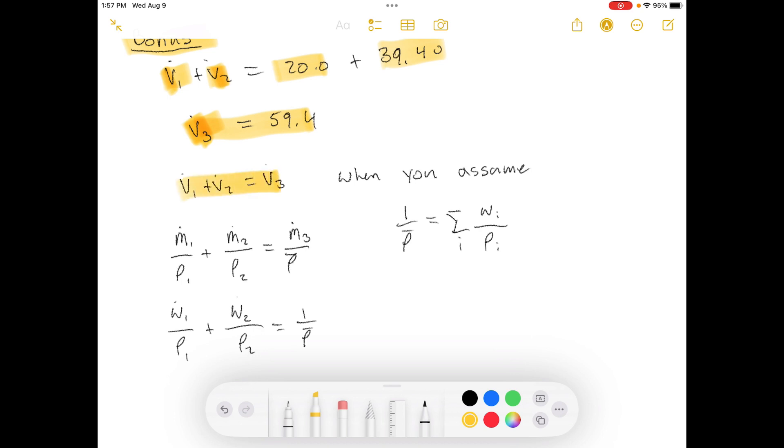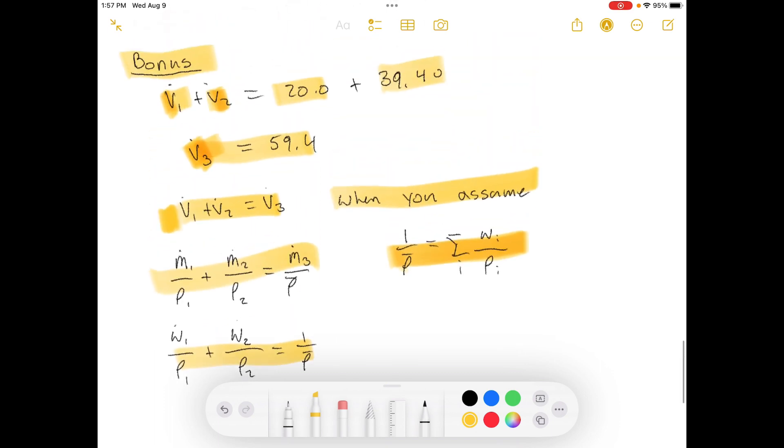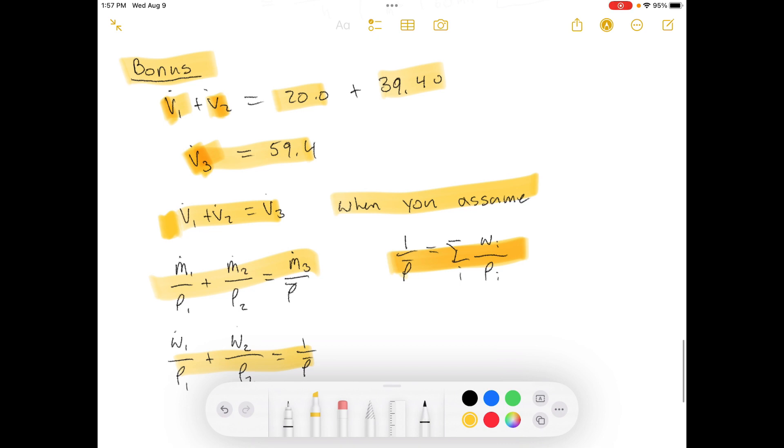So, this means this, right? Because if you assume this, then this is true. And then this is true. And that's what that equals. So, that's a little bit of bonus information. Remember, if you're assuming volume is additive and you're using this equation, maybe it's easier to use this instead.